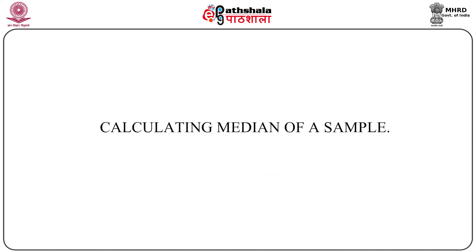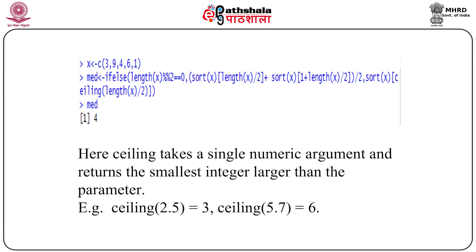Our next problem is calculating the median of a sample. R helps us handle even large amounts of data efficiently. To understand the program, you need to know the ceiling function: ceiling returns the smallest integer larger than its argument. For example, the ceiling of 2.5 is 3, and the ceiling of 5.7 is 6.